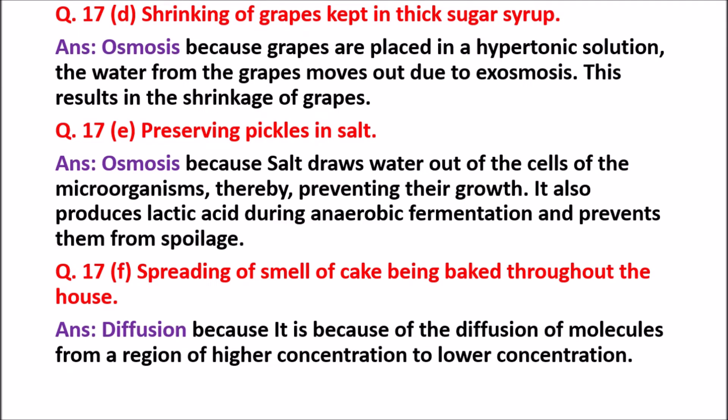Question 17D: Shrinking of grapes kept in thick sugar syrup. That is due to Osmosis. Because grapes are placed in a hypertonic solution, the water from the grapes moves out due to exosmosis, resulting in the shrinkage of grapes.